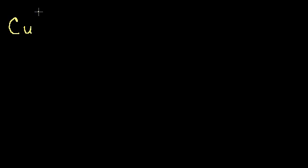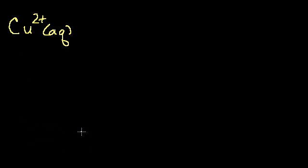Let's say I had a reaction where I had some copper ions with a positive charge of 2 in an aqueous solution. There could be some other negative ions in that solution, but when you have these ions in solution, they all disassociate — you just have a bunch of ions floating around in water. There could be some negative ones to neutralize the entire solution. But let's just worry about the positive ones, and in that solution I'm going to put a bar of zinc.